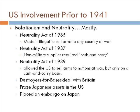Let's review some of the U.S. involvement prior to 1941, because 1941 is when we actually end up in war with Germany and Japan. Before that we were isolationist and neutral for the most part. There are a few different Neutrality Acts during this time period. The Neutrality Act of 1935 made it completely illegal to sell arms or weapons to any country that was at war at the time.